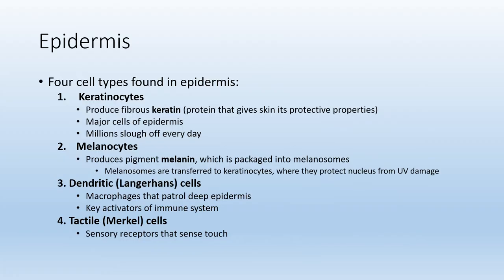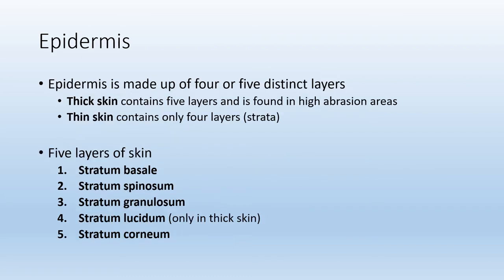The epidermis is a stratified epithelium, meaning it has many layers of cells. We can further break up these layers into five or even four layers. Two types of skin are found throughout the body: thick skin and thin skin. Thick skin is found on the palms of your hands and the soles of your feet and contains all five layers. Thin skin is everywhere else on the body and contains only four of the five layers.